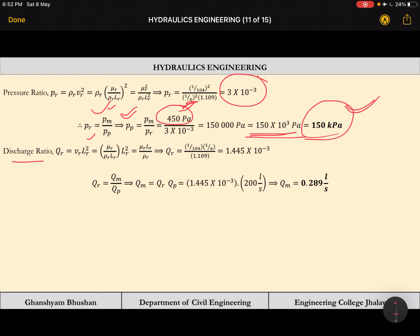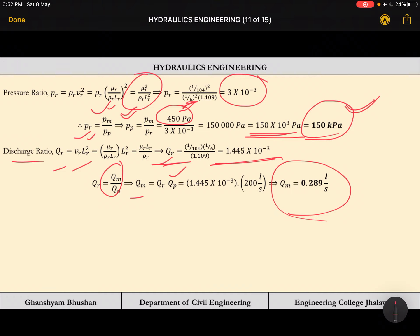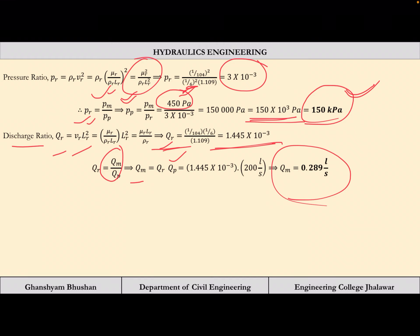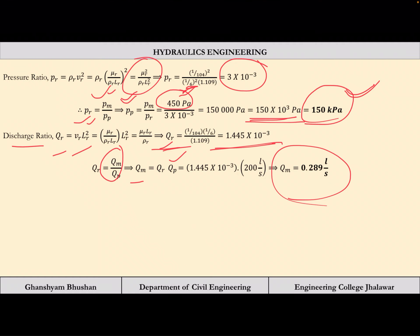Discharge ratio Qr = Vr * Lr² is calculated from known values, giving Qr = 1.445 × 10⁻³. Since Qr = Qm / Qp and prototype discharge Qp = 200 L/s, model discharge Qm = 1.445 × 10⁻³ × 200 = 0.289 L/s. The basic concept is what matters; the number of problems solved is less important than understanding the method.